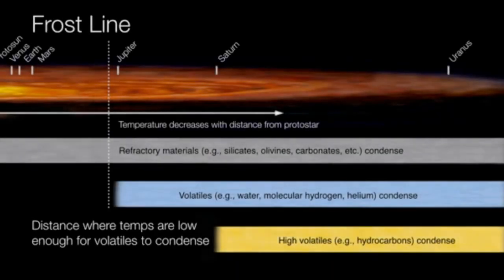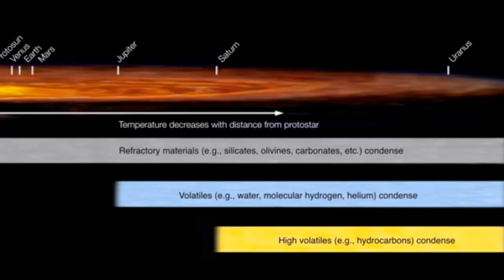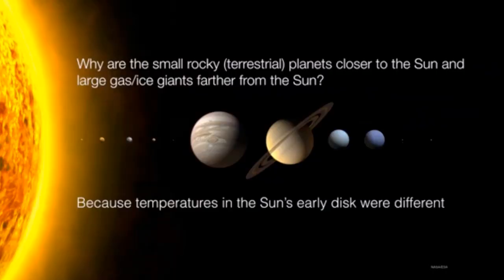However, it's not until you get past the orbit of Mars towards the orbit of Jupiter that temperatures drop low enough that volatiles can condense. Water molecules, hydrogen, and so on freeze out and become solid enough or at least slushy enough to fully condense. Once you get out past the orbit of Saturn, temperatures are low enough to even allow high volatiles such as hydrocarbons, methane, and ammonia to condense. The point where the temperature drops low enough is called the frost line.